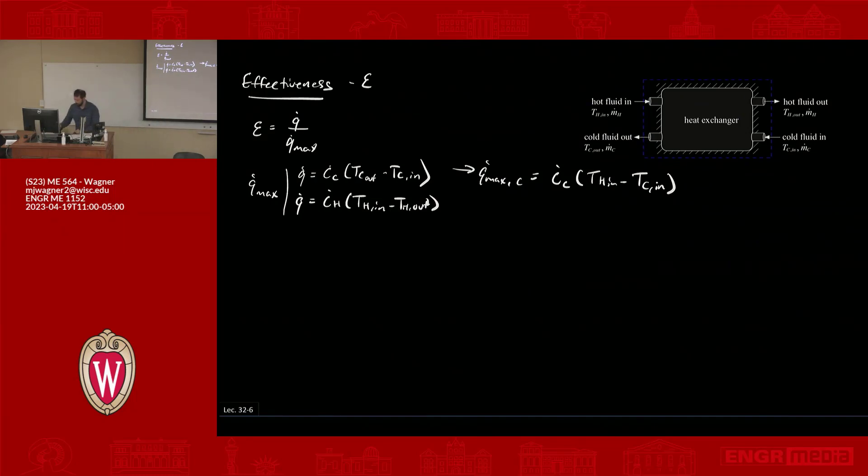Same thing for H. So Q max is equal to C dot H times T H in minus T C in. So I'm going to get these two estimates. My actual Q max here is going to equal the minimum of Q max C and Q max H.